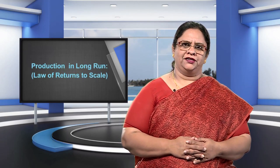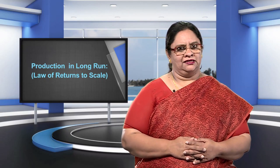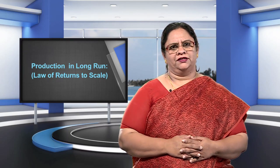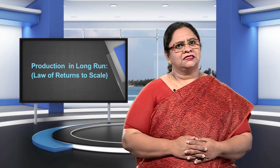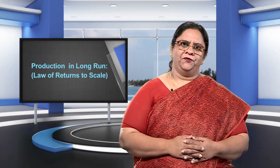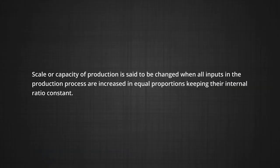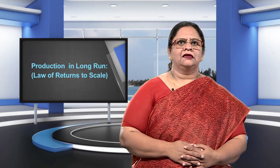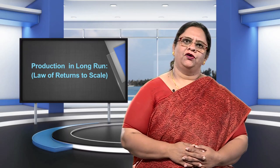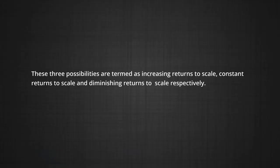We have so far looked at production in the short run. We now turn to production in the long run and examine the law of returns to scale. The law of returns to scale operates during the long run and represents the effect of changes in the scale of production on the output produced. The scale of production is said to be changed when all inputs in the production process are increased in equal proportion, keeping their ratio constant. When the scale of production is increased, output increases either at an increasing rate, a constant rate, or at a diminishing rate. These three possibilities are termed increasing returns to scale, constant returns to scale, and diminishing returns to scale respectively.